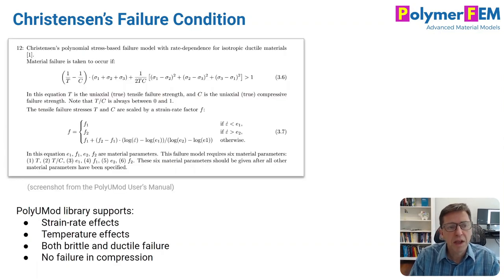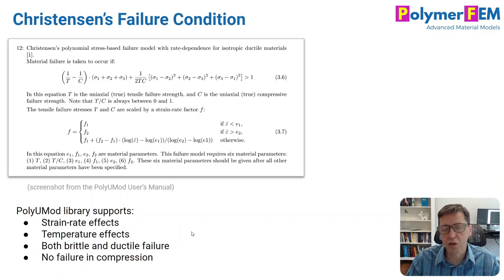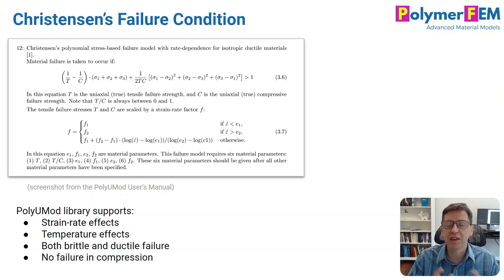Before testing this, let's look at PolyUMod. In the PolyUMod library we have developed, we actually support the failure condition developed by Christensen. It's available for you to use, and you can calibrate these parameters in MCalibration if you're interested. It includes strain rate effects, temperature effects, brittle and ductile failure, and also no failure in compression if that's what you need. So it's a slight extension of the Christensen approach, available in the PolyUMod library and MCalibration.